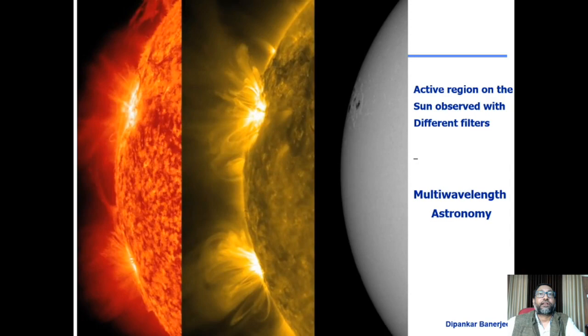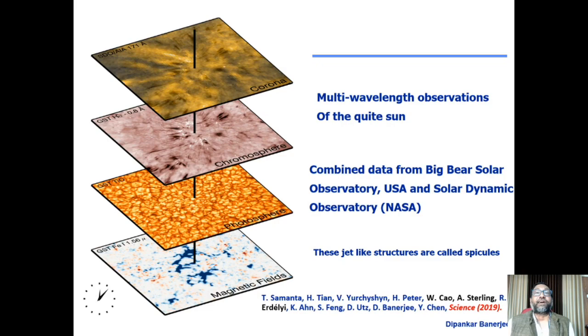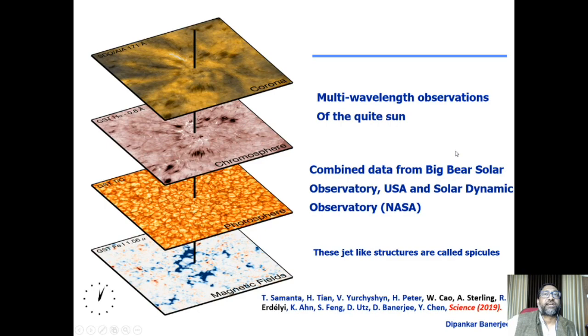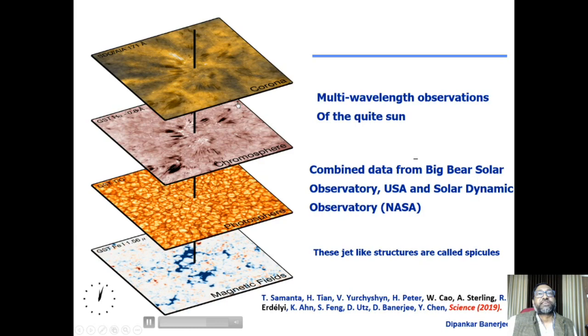This is an example — a former student combined data from the Big Bear Solar Observatory, a ground-based 1.6-meter telescope — one of the largest solar telescopes on the ground — with data from a space platform. One probes the coronal height and the other probes lower heights. He was looking at very small-scale dynamics in the quiet sun.